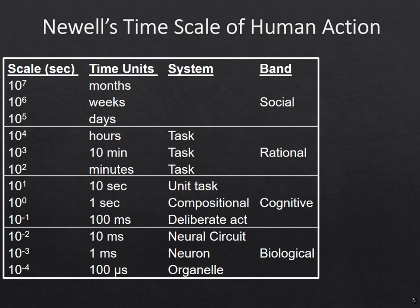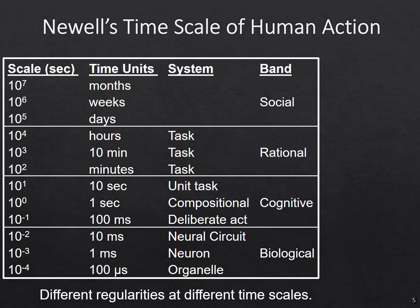One of the important things for understanding cognitive architecture is to think about the different timescales of behavior that Newell laid out. These go from the biological band at the very lowest level, to the cognitive band, to the rational band, and the social band. When we think of human behavior, it's really important to understand which of these timescales we're talking about — timescales that differ by orders of magnitude.